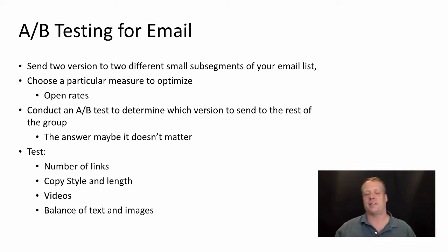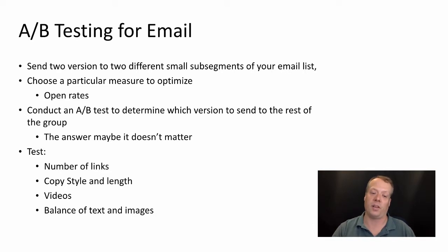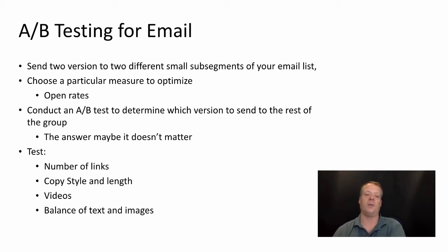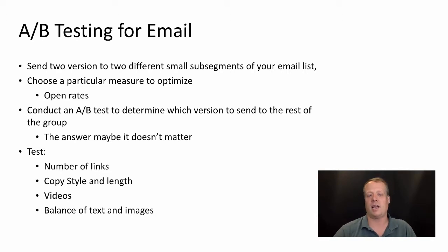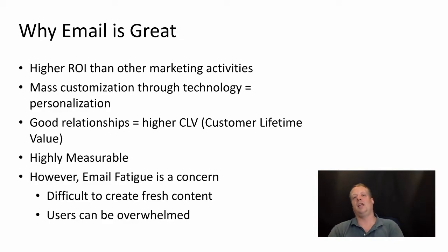The answer may be that both versions do equally well, in which case you can run a bigger test or just send either version. You can test things like the number of links, copy style, videos, and the balance of text and images. A/B testing is by far the most common form of email testing — people look at open rates across different subject lines, delivery times, the optimal number of links, conversion rates, copy styles, and the effect of video and images.